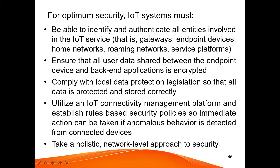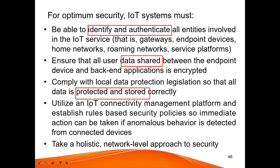These are some points where we can have optimum security using the IoT system. While writing, keep in mind: first I discussed identification and authentication, then encryption of data sharing, then protection and storing procedure of all the data, then IoT connectivity, and finally the network-level approach. The first one will be identification and authentication, next sharing all data with encryption, next how to protect and store data, then IoT connectivity, and the last one is network-level approach. These are the highlighted points you have to remember and write properly.